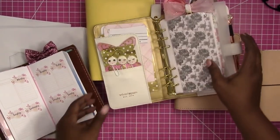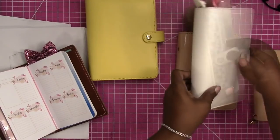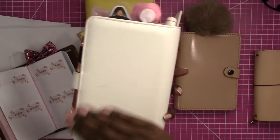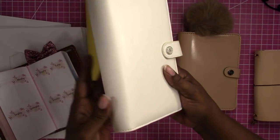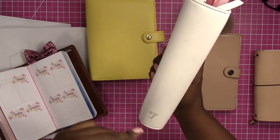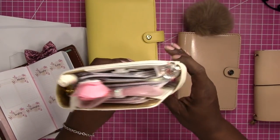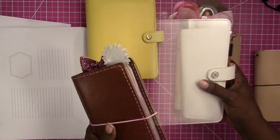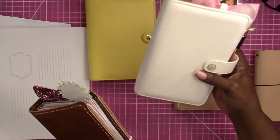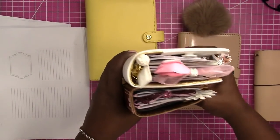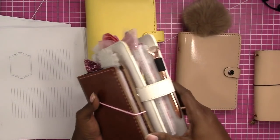So in this binder, this is the Webster's pages personal size. I think this might have been one of the Color Crush line. I'm not sure. But that is just one example of how you can use inserts for personal size in two different binding systems.